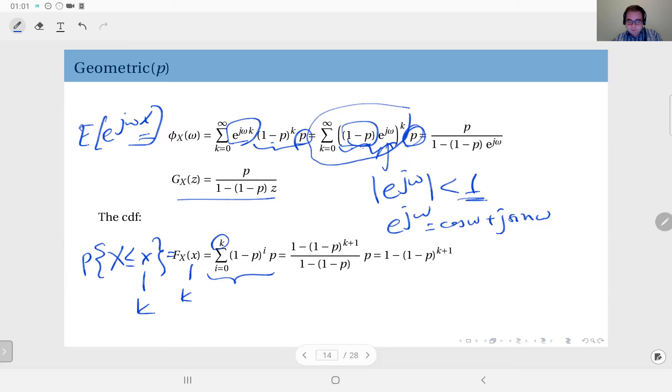And that is 1 minus p to the power i times p, and the sum from 0 up to k. And that is, if you just put in the identity I gave you earlier, that is 1 minus 1 minus p to power k plus 1 divided by 1 minus 1 minus p.